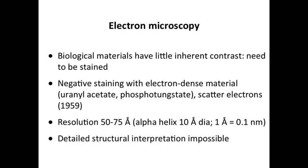Electron microscopy has revealed a great deal about virus structure. You have to stain the viruses in order to see them in an electron microscope. Viruses, like many other biological materials, don't have much inherent contrast. So you have to apply a stain — in the case of an electron microscope, an electron-dense stain. Otherwise the electrons will go right through it. Typically you use electron-dense materials like uranyl acetate or phosphotungstate, and you coat the viruses with it. The electrons bounce off wherever the stain has surrounded the particle.